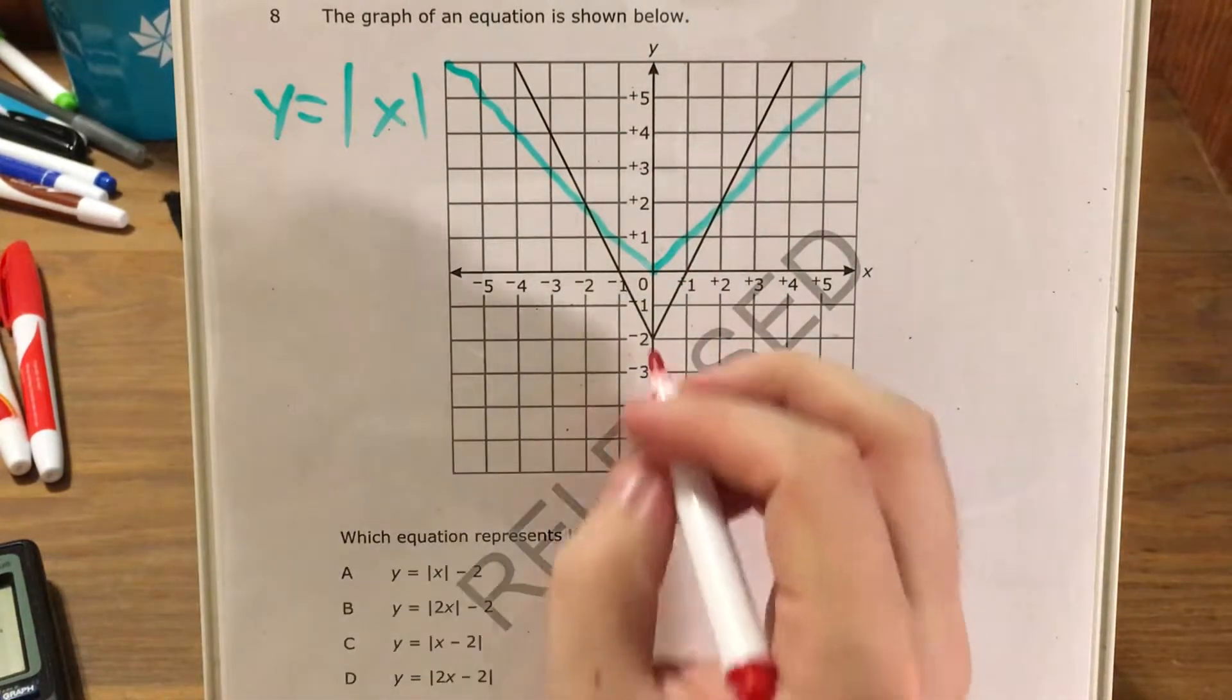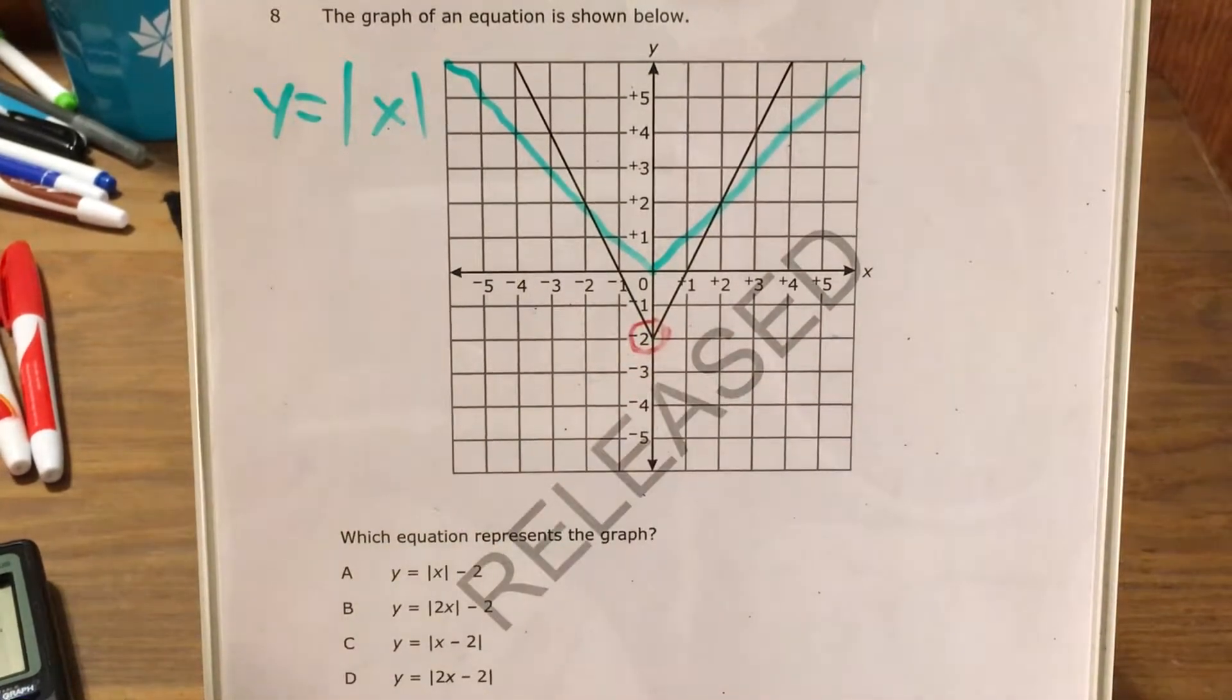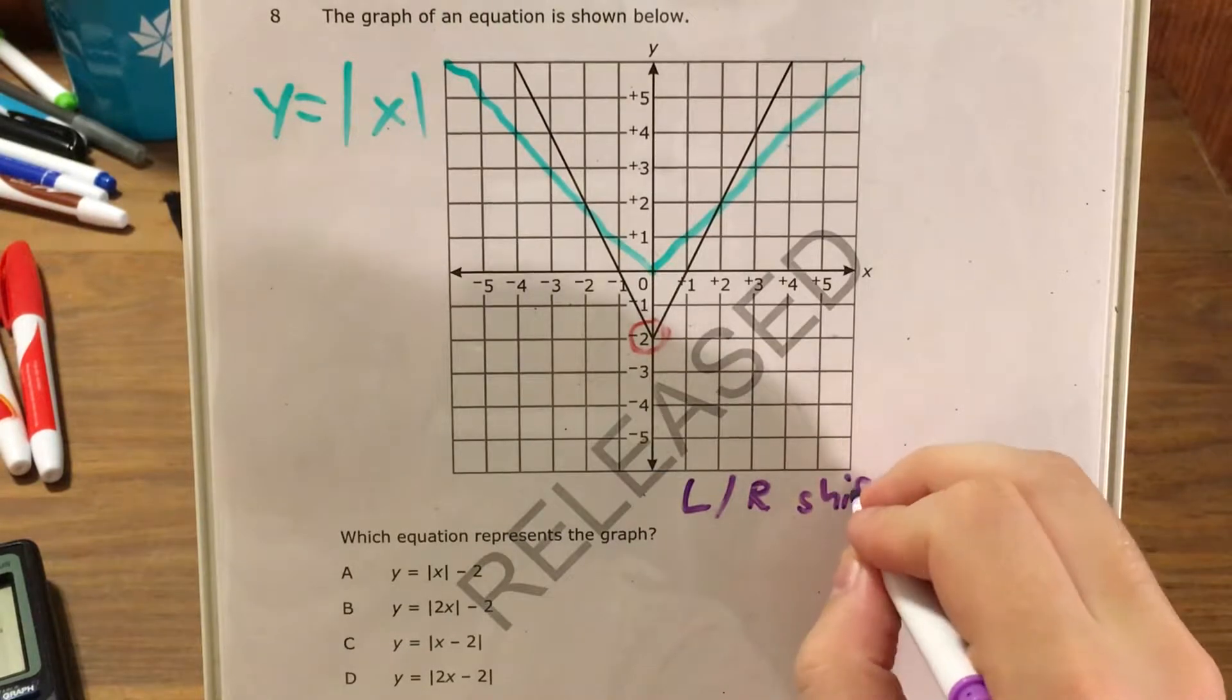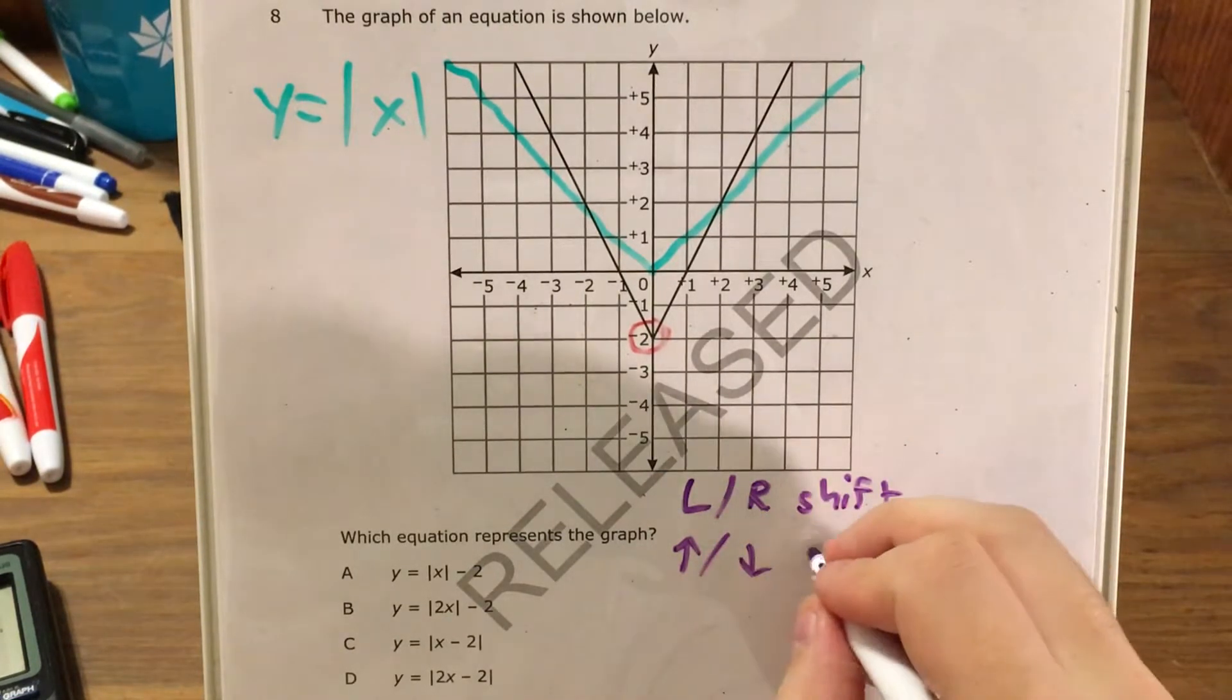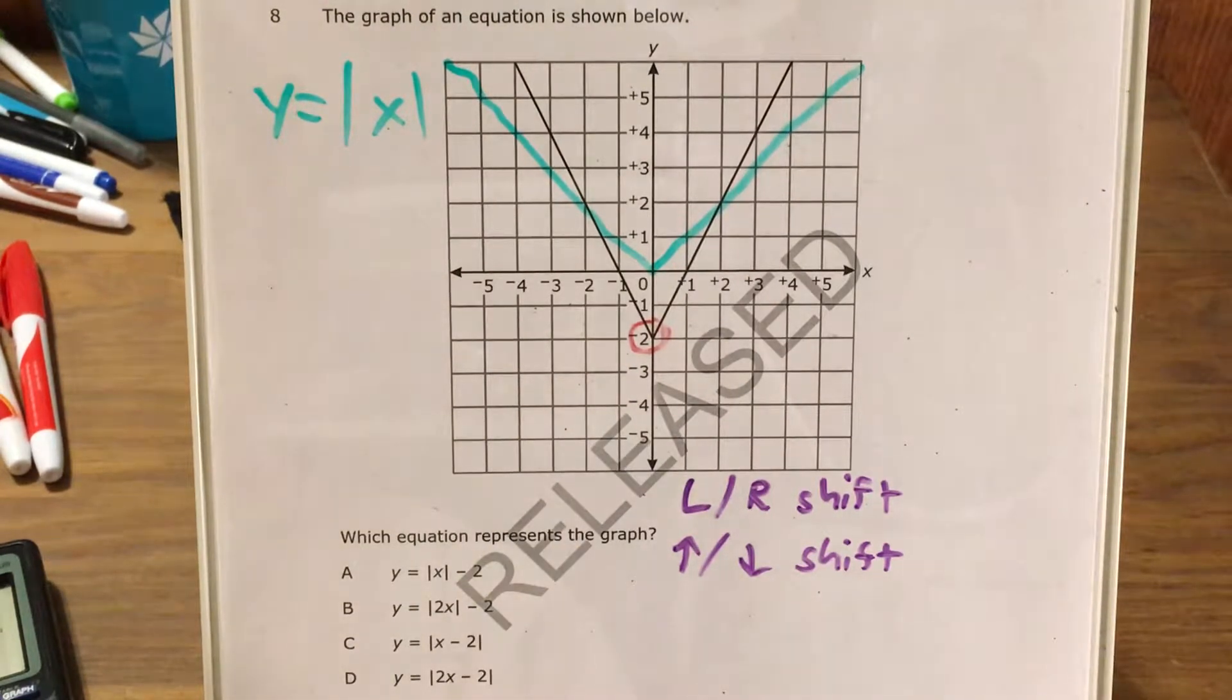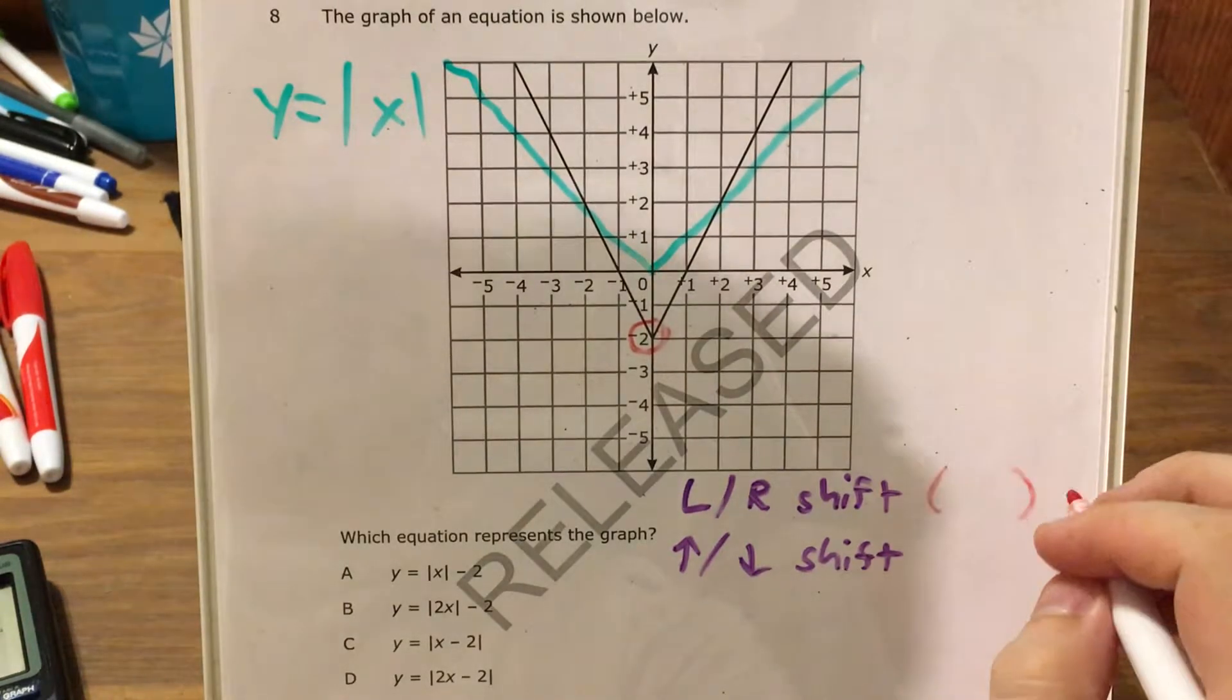And first thing I can see is that this is hitting the y-axis at negative 2, that's where both functions are converging. And if I remember from transforming, that a left to right shift and an up or down shift actually look rather different, because a left to right shift is going to mean that in parentheses